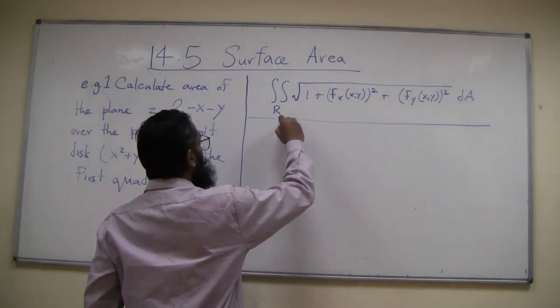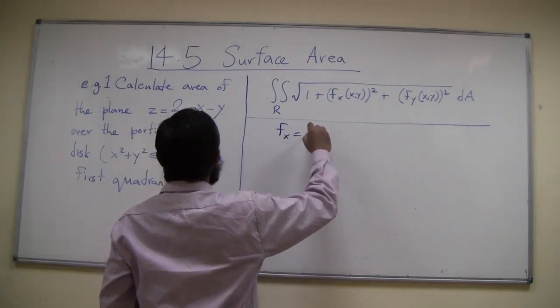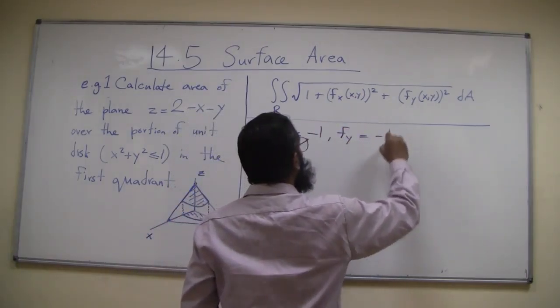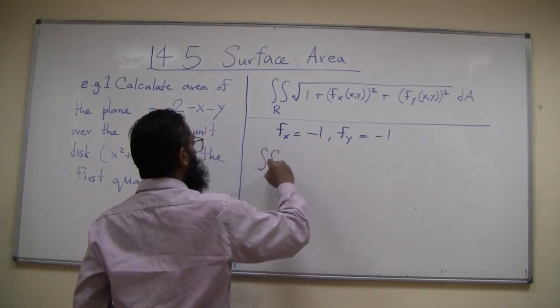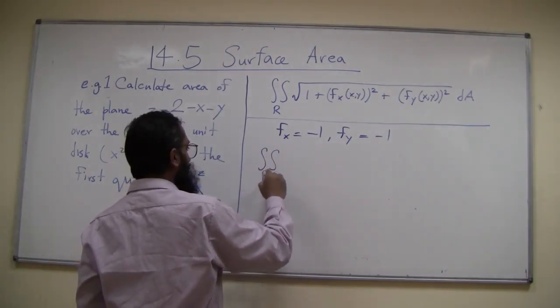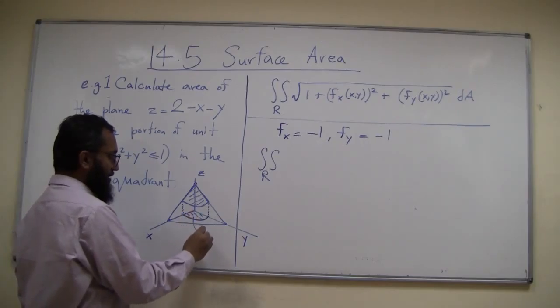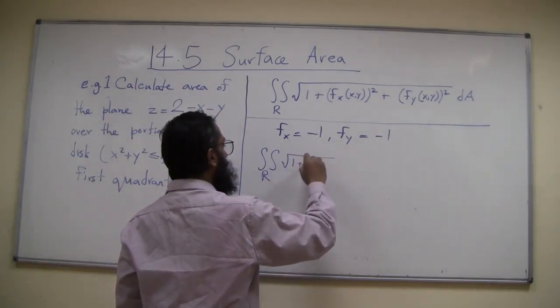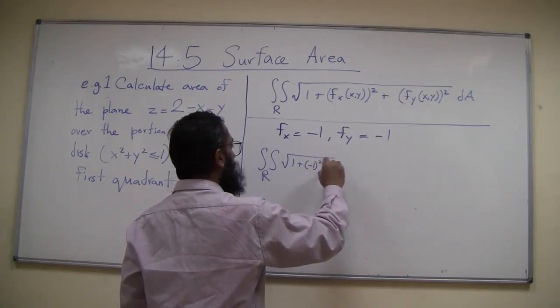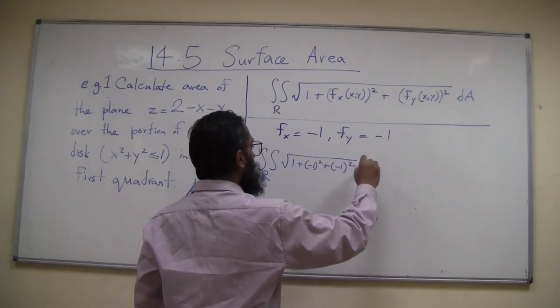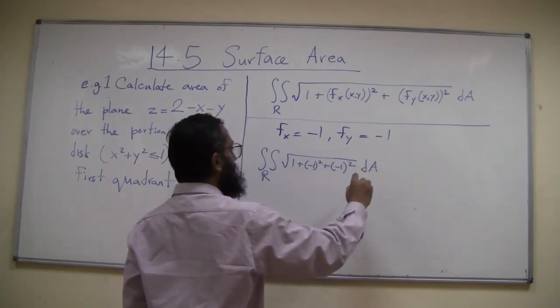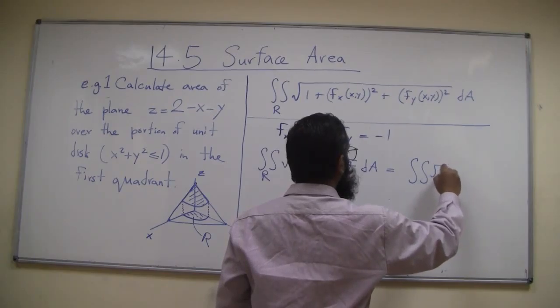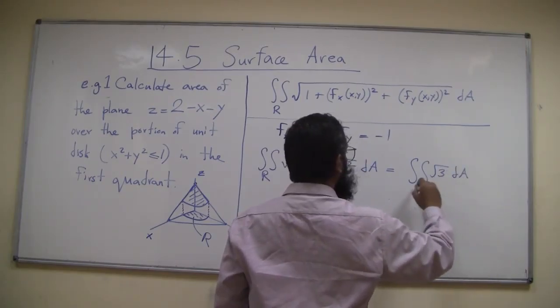Your f sub x here is minus 1, f sub y is minus 1. So this is the integral over this region R of 1 plus minus 1 squared plus minus 1 squared dA. This is the integral of square root of 3 dA over the region R.